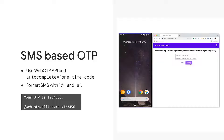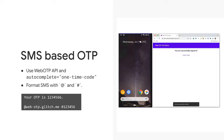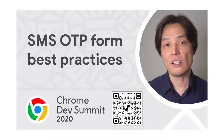The service provider sends specially formatted SMS messages which tell the APIs to provide the OTP for the user. This means the user doesn't have to leave your website to enter the OTP. Also, because the message includes the target origin, this method won't work when the user is on a phishing website. Both WebOTP API and autocomplete one-time code work on desktop and on mobile. Previously, I gave a talk about how to optimize SMS OTP forms. You can watch the video to learn more about SMS OTP forms' best practices.